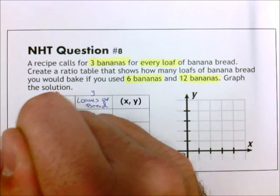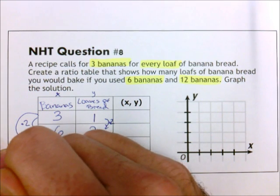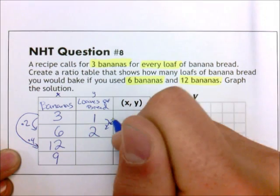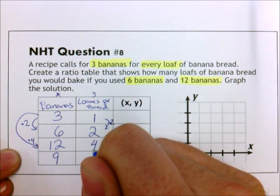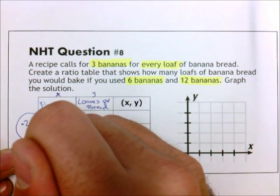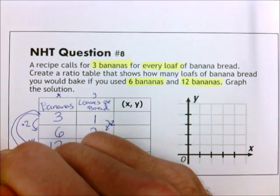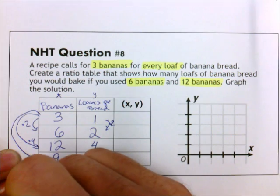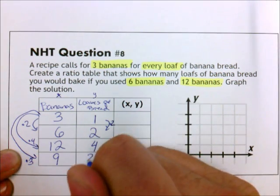3 to 12 now. We multiply by 4. 1 times 4 is 4. And then we have 3 to 9. That was just the extra one. So I am going to multiply by 3 and I get 3.